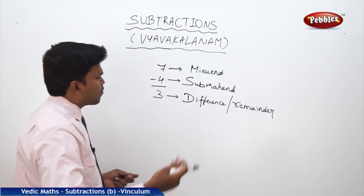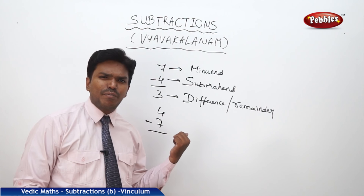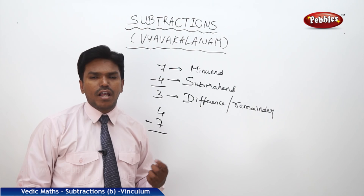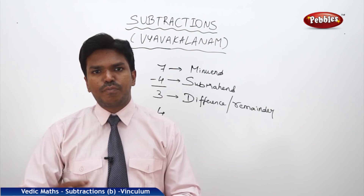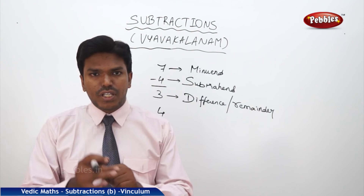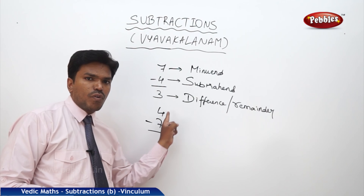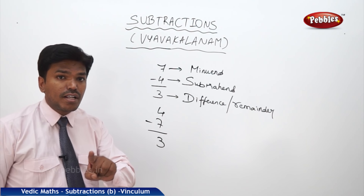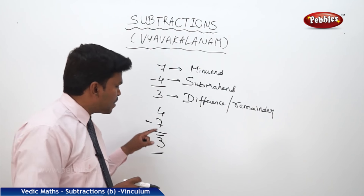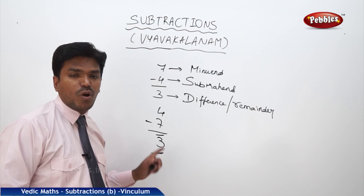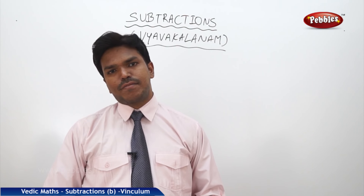Now, 7 minus 4 is possible and gives 3. But suppose we write 4 minus 7 — is that practically possible? If you have 4 rupees and a friend asks for 7 rupees, you cannot give it. In such cases, we subtract the upper number from the lower number — that is, 7 minus 4 equals 3 — but we write the answer with a bar on it: 3 bar. This bar indicates it was a negative or reverse subtraction.